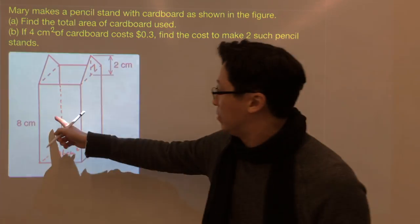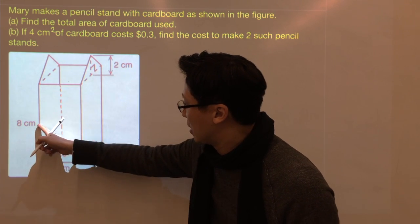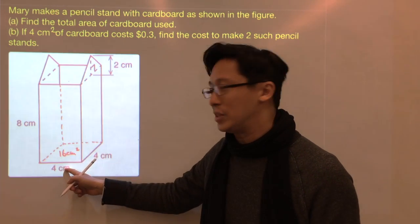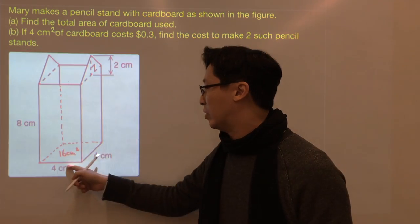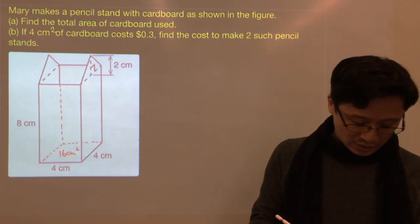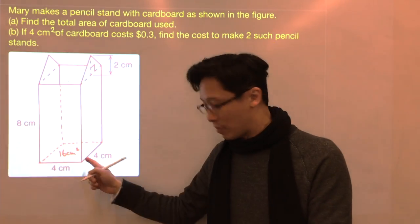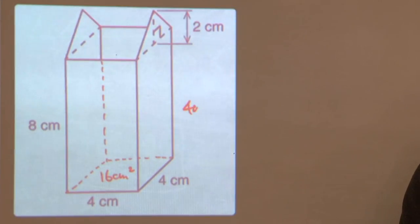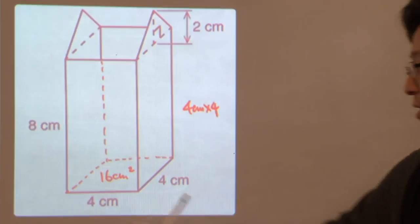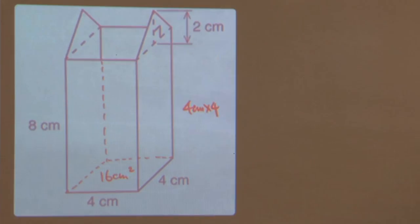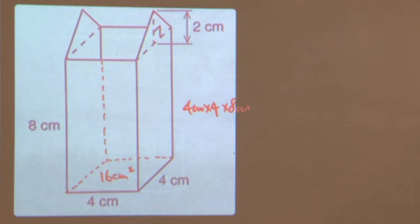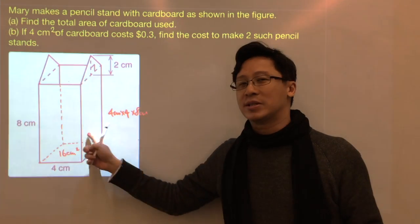What about these lateral faces? Height is 8 cm, this is 4 cm, so this will be equal to perimeter of the base times the height. So the perimeter of the base will be 4 cm times 4, that's 16 cm, times height times 8 cm. So this part will be the sum of the areas of all the lateral faces.